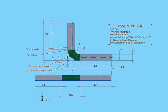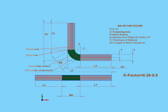The K factor equals t — the offset distance to the neutral axis — divided by T, the thickness of the material. In the formula, the bend allowance equals 2 times pi, multiplied by A (the angle), multiplied by the sum of R (the bend radius) plus the K factor multiplied by T (the thickness of the material), and then you divide all of this by 360. In theory, the K factor can be anywhere between 0 and 1, but for practical purposes it's more like 0.25 to 0.5. Hard materials like steel have a higher K factor, such as 0.5. Softer materials like copper or brass are going to have a lower K factor, closer to 0.25.